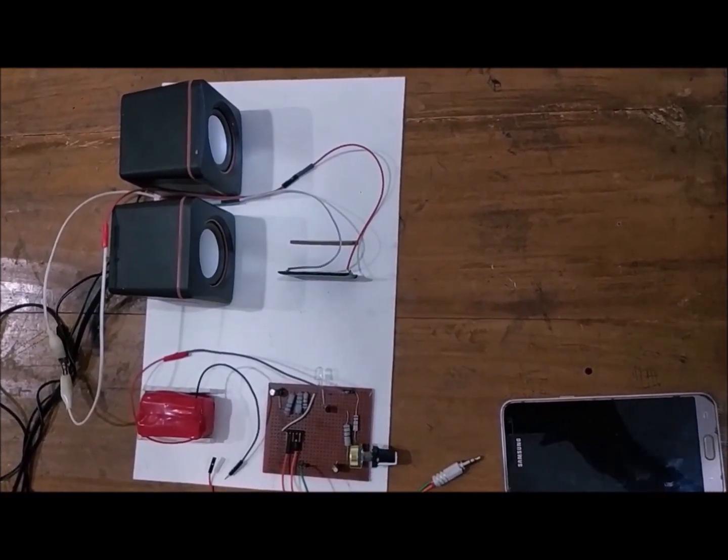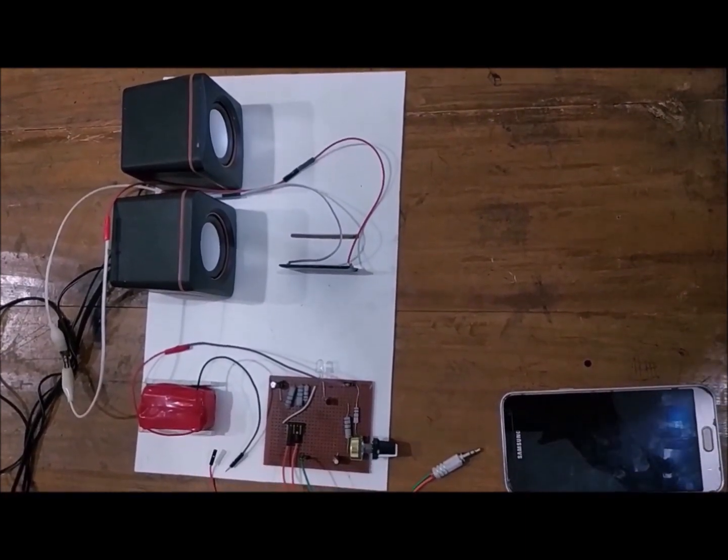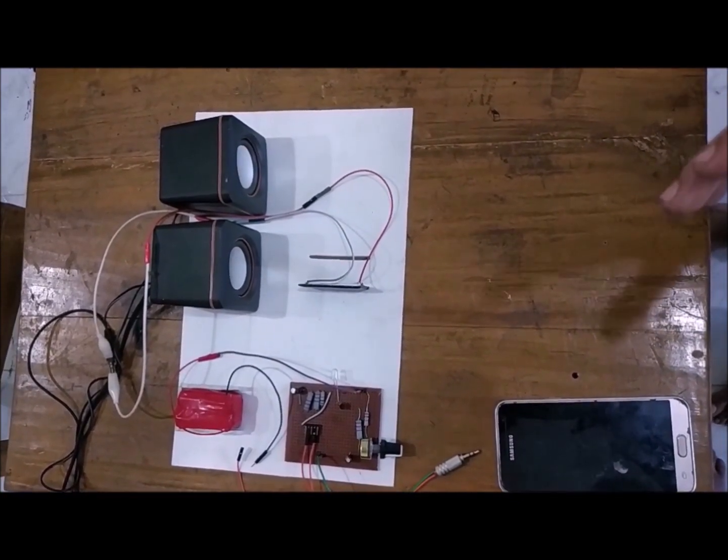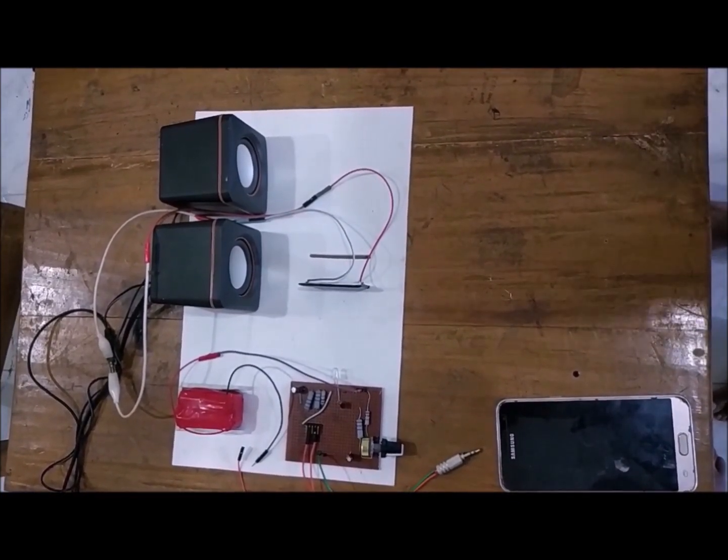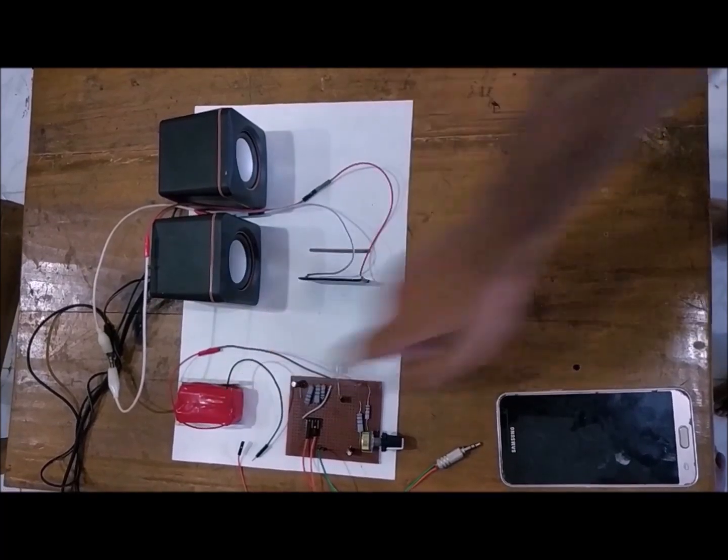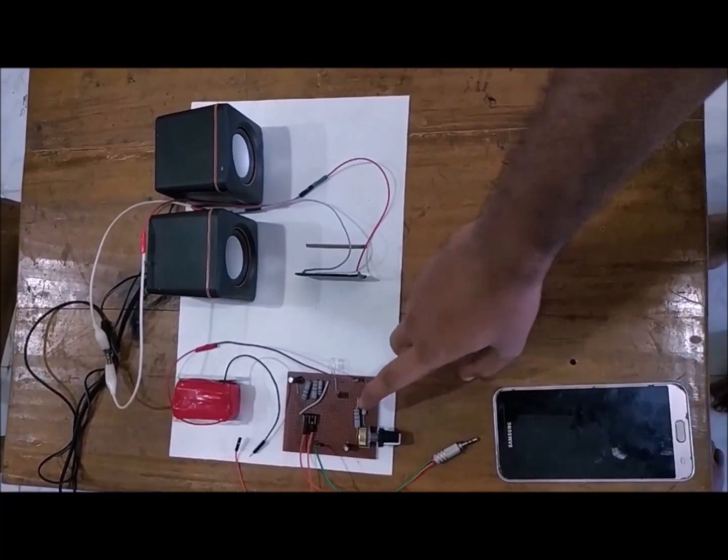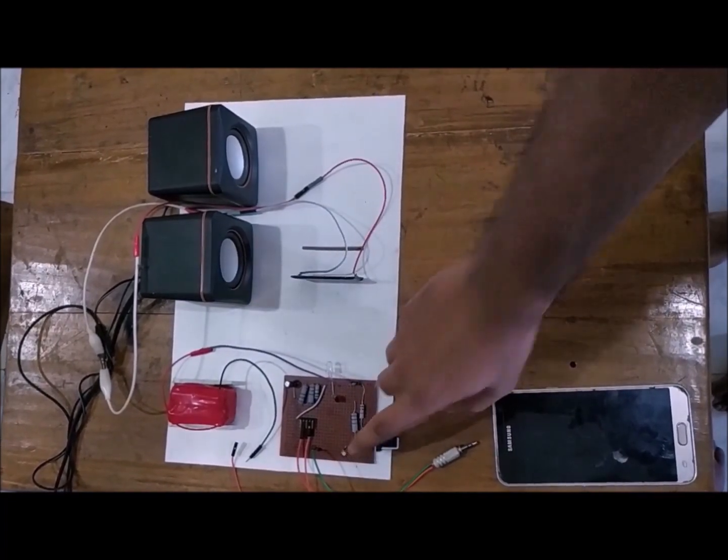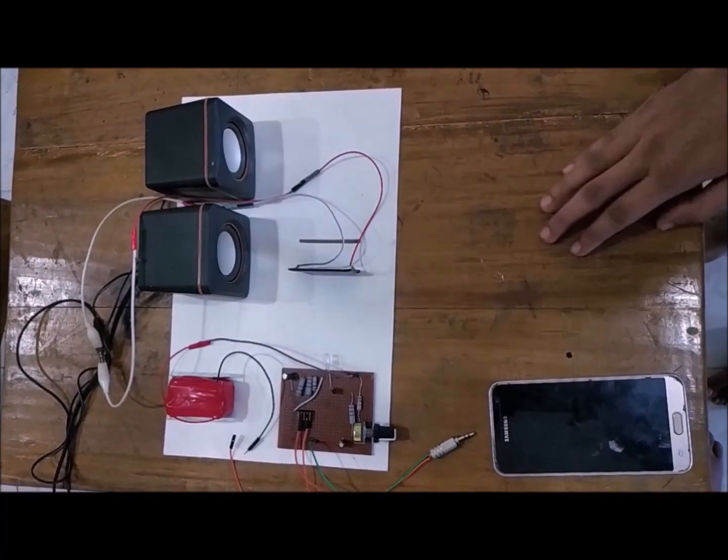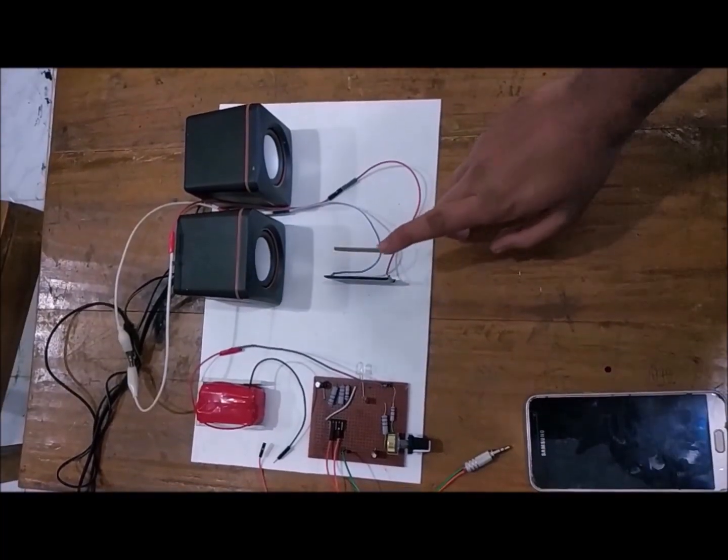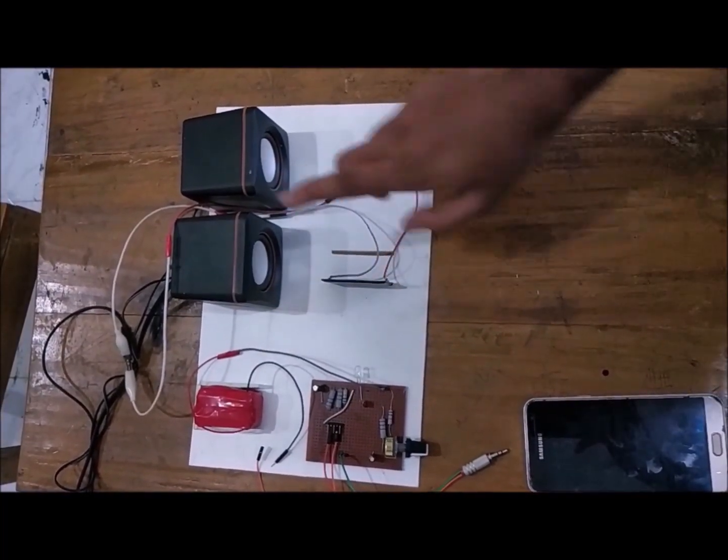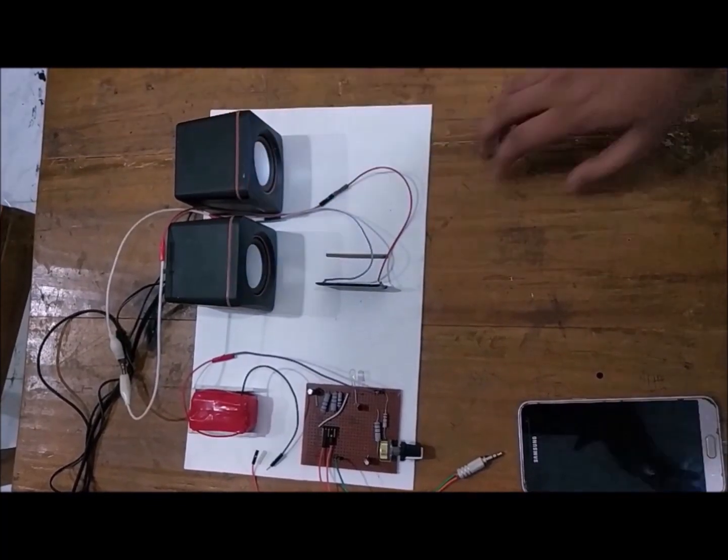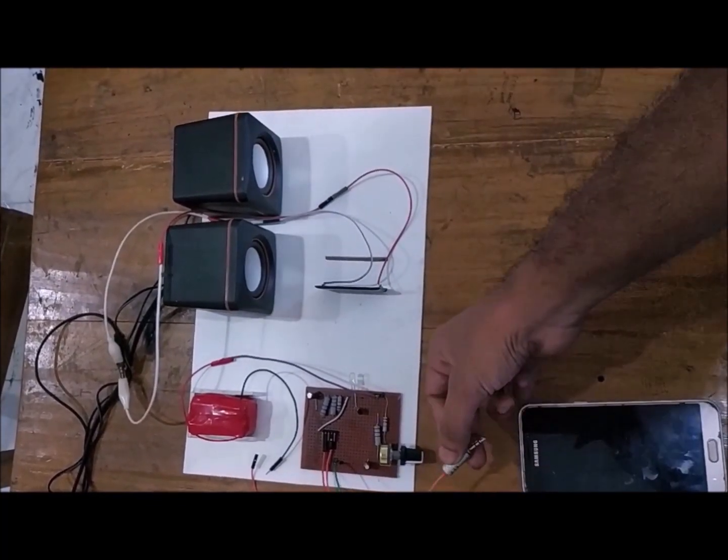In this project we have a transmitting circuit and a receiving circuit. In the transmitting circuit we need components like a 6 volt battery, two 1k resistors, a 300 ohm resistor, a 10k pot, a 10 microfarad capacitor and 100 microfarad capacitor. In the receiving circuit we have a solar panel and two speakers for the output.